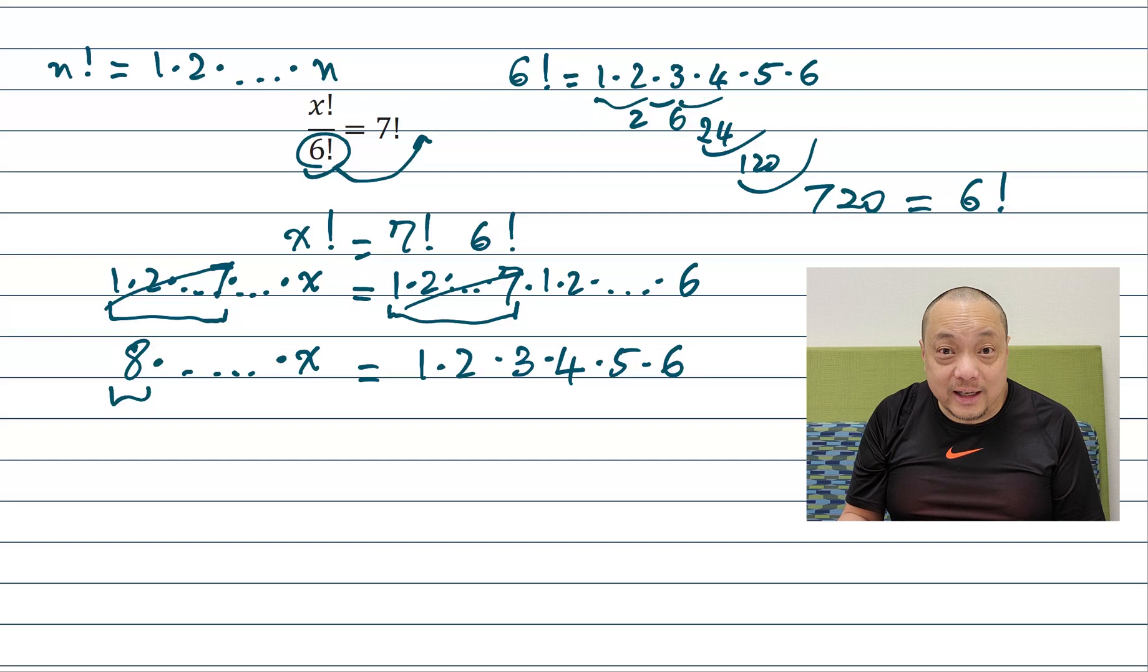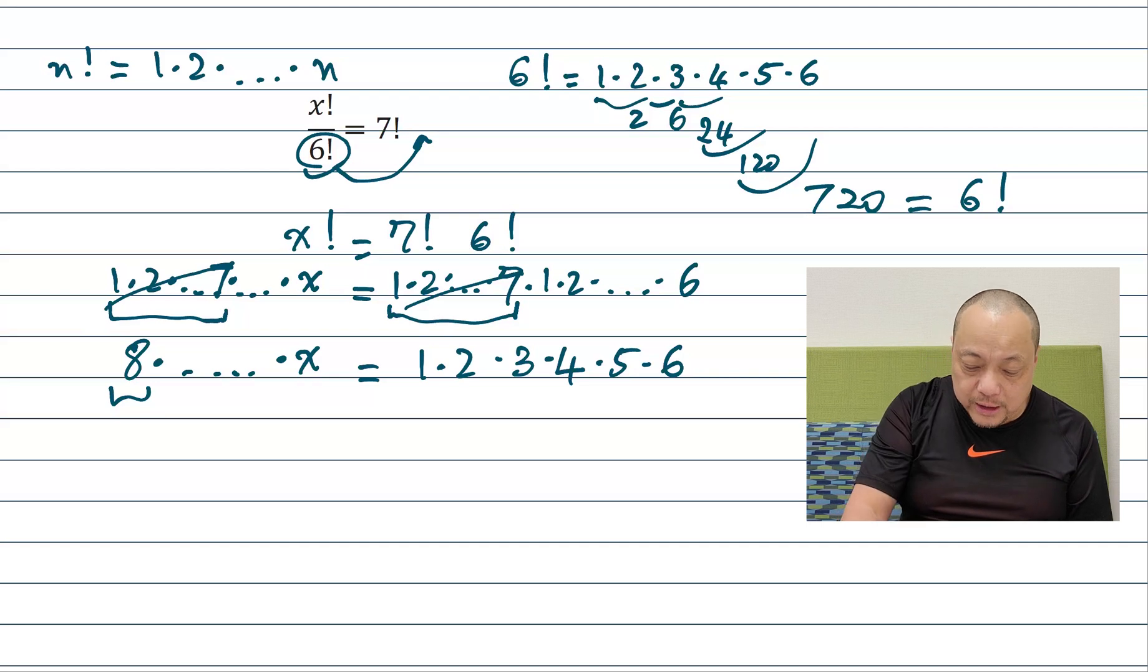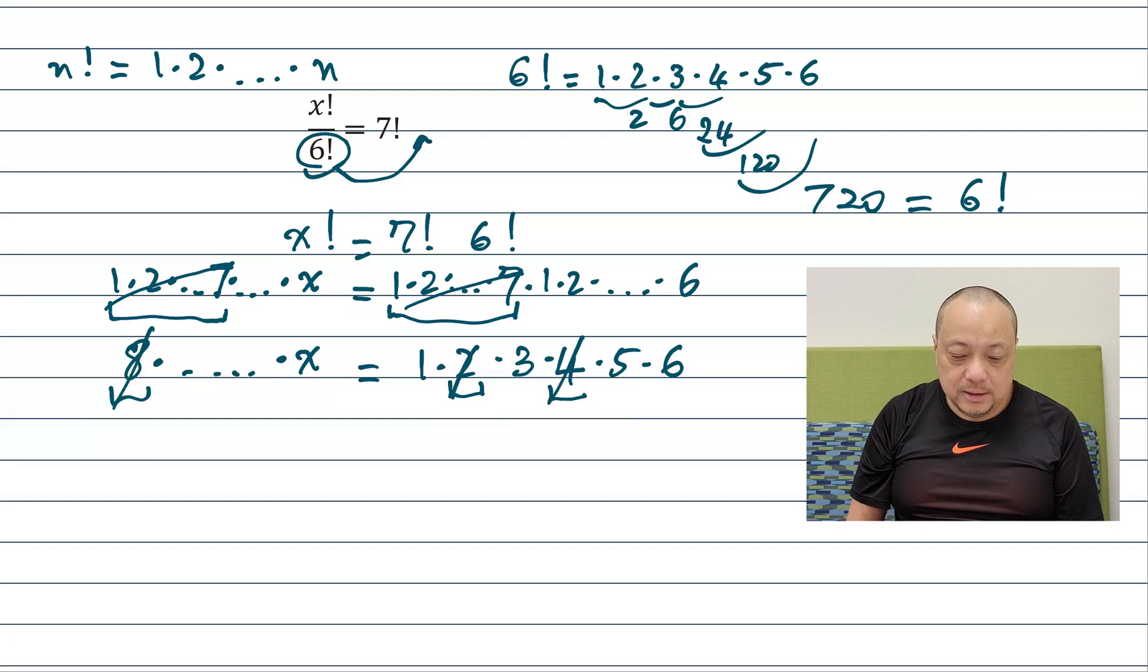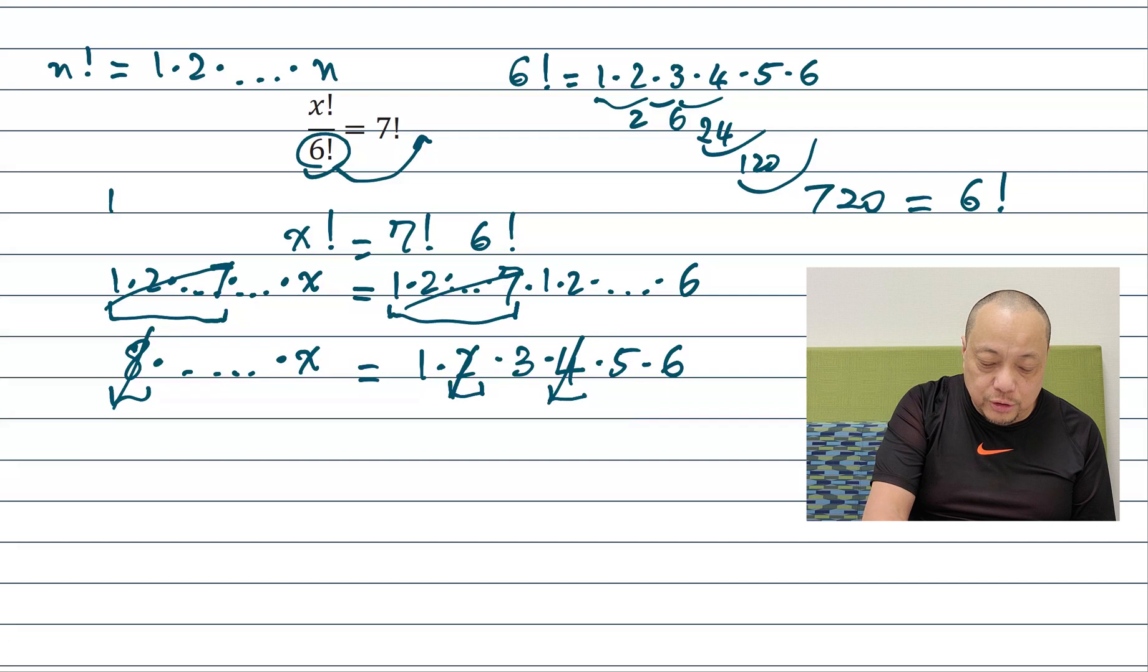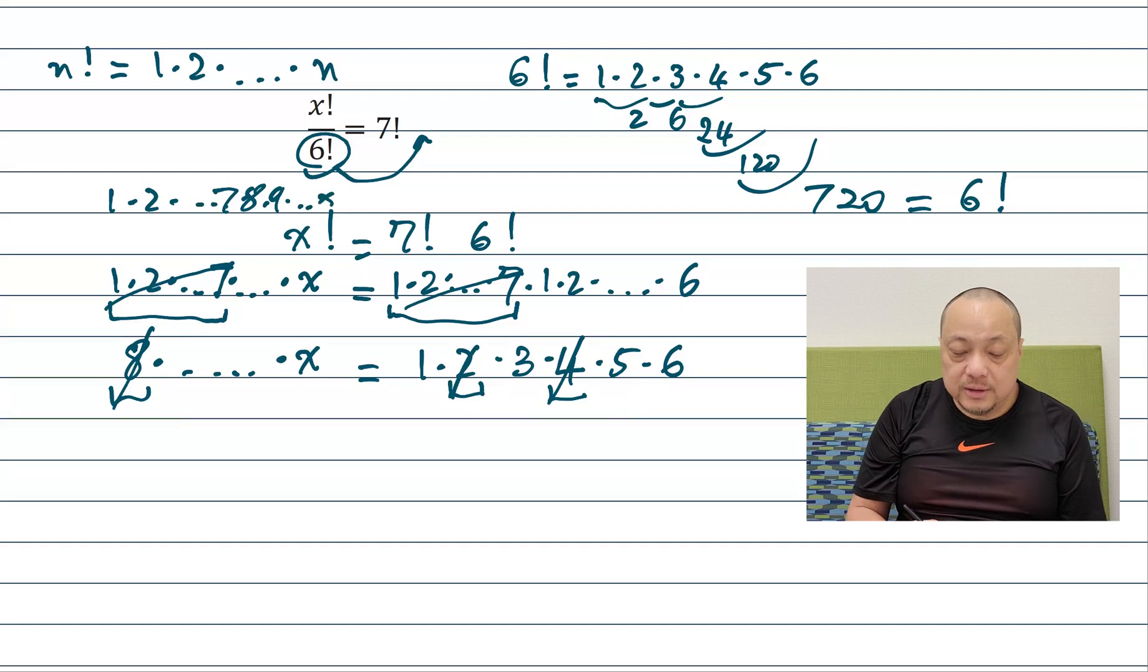I have an 8 on this side. Is there an 8 on the other side I can cancel? There's no 8 but there's a product that equals 8. That's 2 times 4. 2 times 4 equals 8 so I can cancel both sides like that. I remember that x factorial was 1, 2, 3, 4, 5, 6, 7, 8, 9, 10 etc all the way up to x. So I cancel all the 1 through 7. I just canceled the 8 so the next number up is a 9.